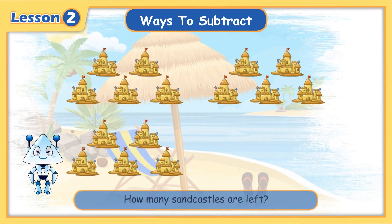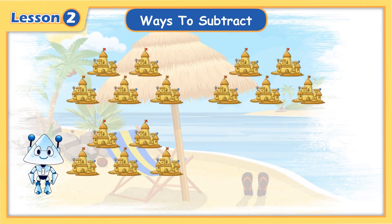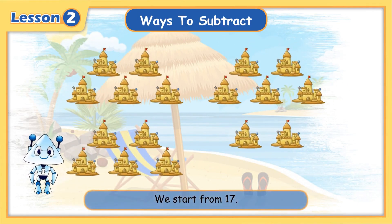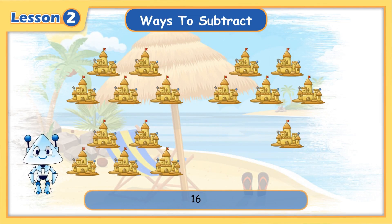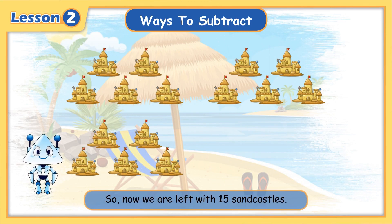How many sandcastles are left? We start from 17 and count back two steps: 16, 15. So now we are left with 15 sandcastles.